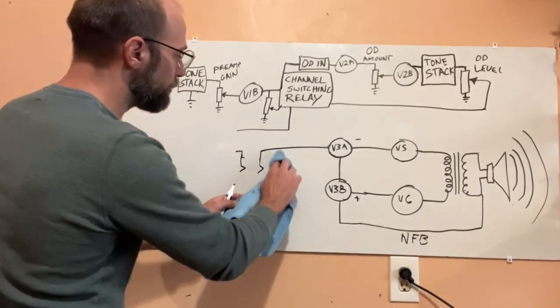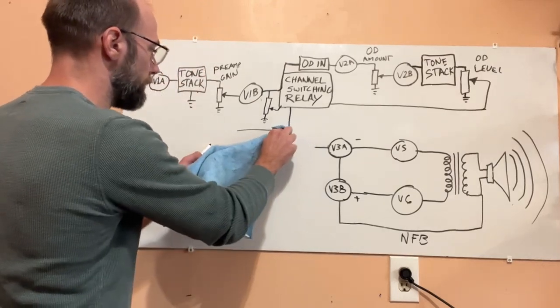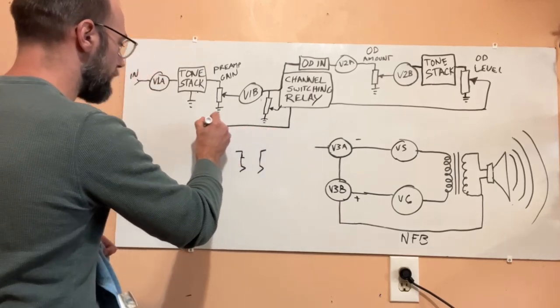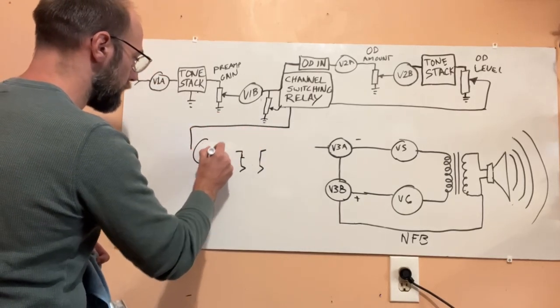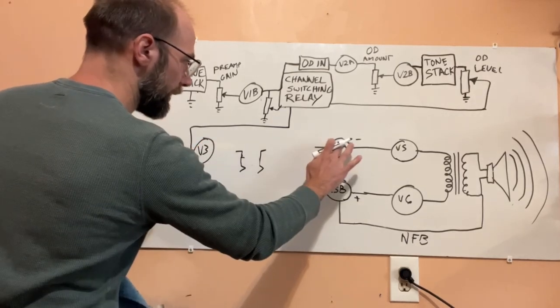If we were to add the tube buffered effects loop, essentially you're getting another tube stage. So it's a little bit more complexity in the amp and it's there regardless of whether you're using it.